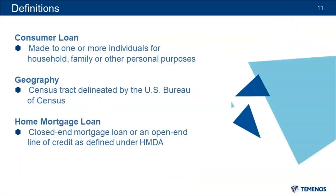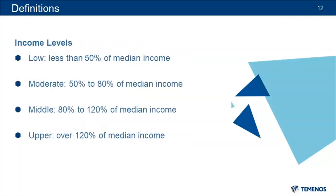A consumer loan is defined as a loan made to one or more individuals for household, family, or other personal purposes. Geography is a census tract delineated by the U.S. Bureau of Census. A home mortgage loan is a closed-end mortgage loan or an open-end line of credit as defined under HMDA. Income levels within geographies or census tracts include: low income is less than 50% of median income; moderate income falls within 50% to 80% of median income; middle income hits 80% to 120% of median income; and upper income is over 120% of median income.